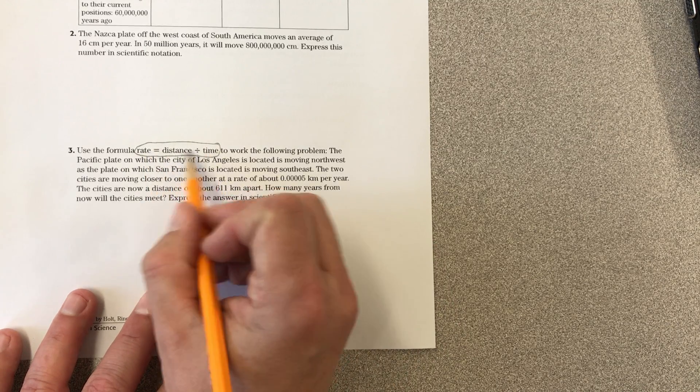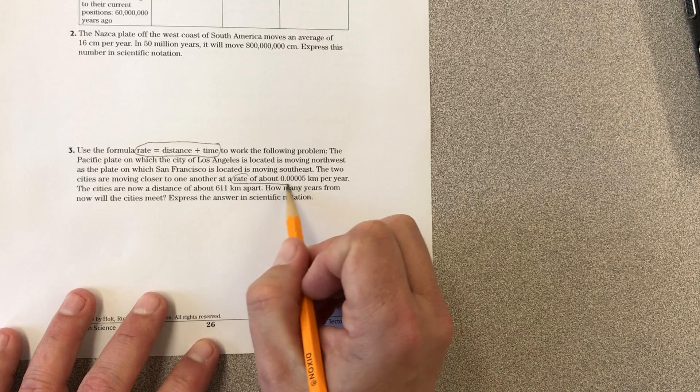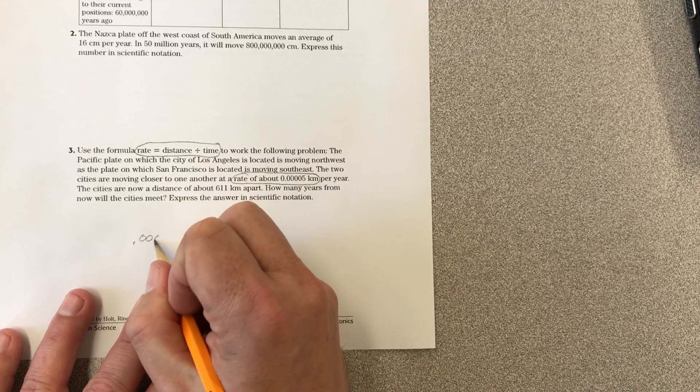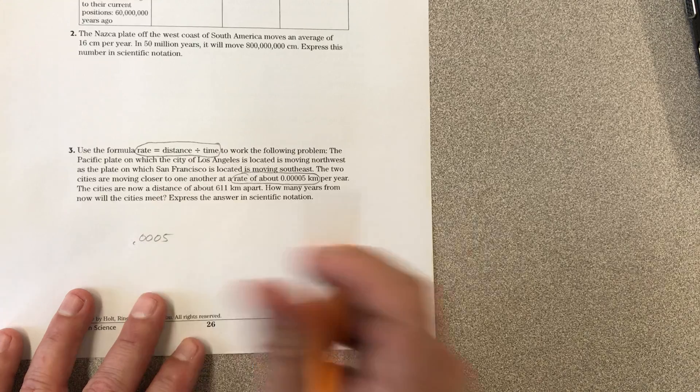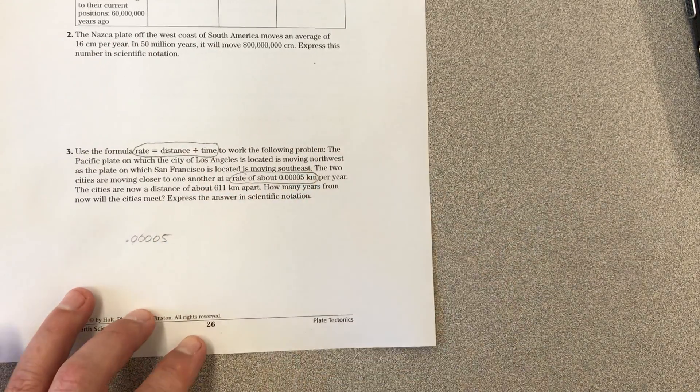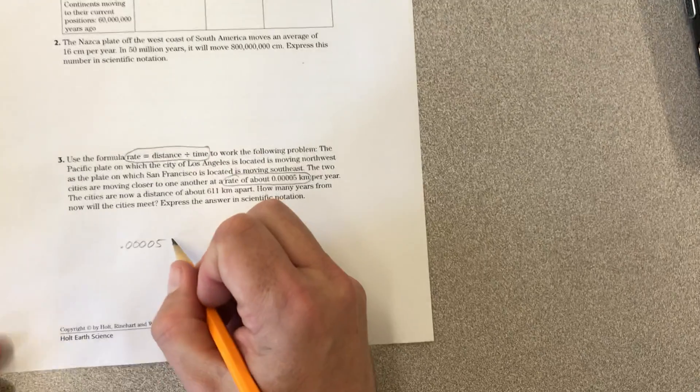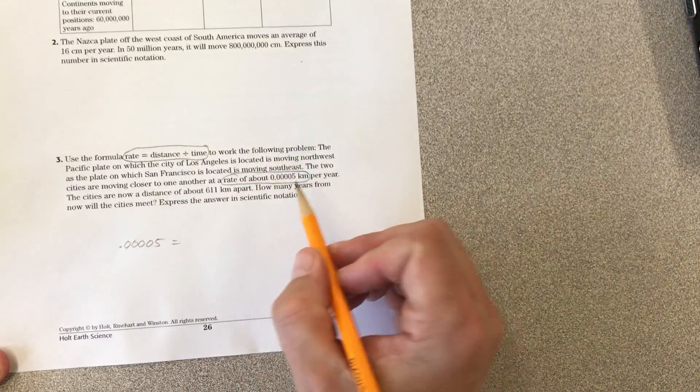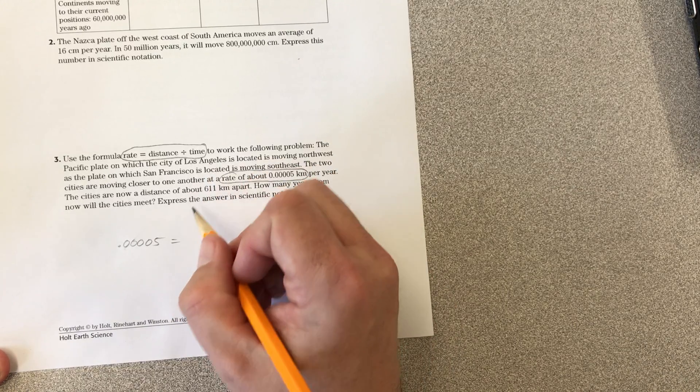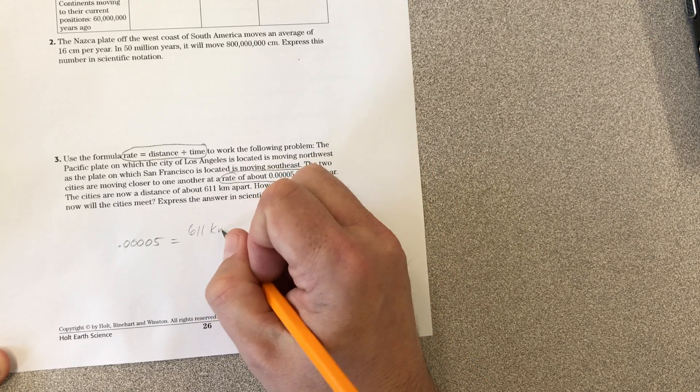We have two of these items but we're missing one. It gives a rate of 0.00005, four zeros. So 0.00005 is our rate. Distance: we know the distance between the cities is 611 kilometers.